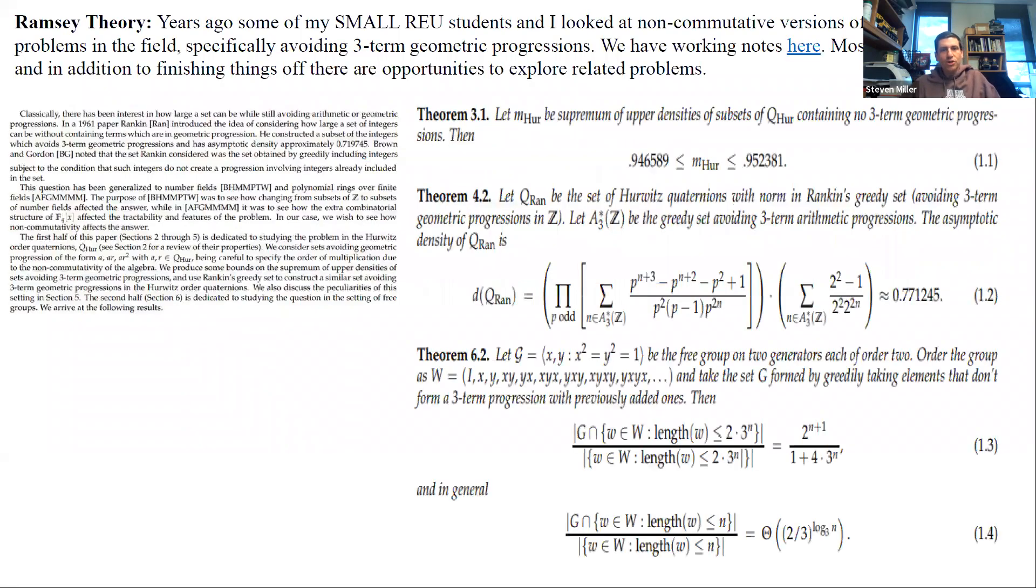So the first one I want to talk about is a project that's mostly done. It's on a non-commutative version of some problems in Ramsey theory. And so you can briefly describe this as trying to find sets that don't have a certain structure. So for instance, if you look at the integers, what's the largest set you can have from one to n such that you have no three terms in a geometric progression? So obviously, if you have one, one can be in a geometric progression with anything. If you have one, two, four, one, three, nine, that would be a problem. If you have two and four, you can't have eight.